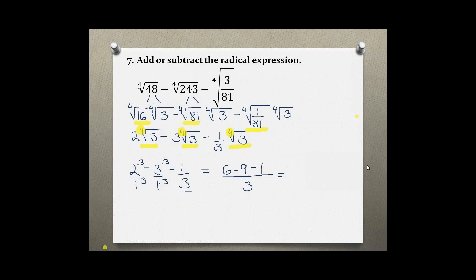I can subtract these fractions now, or the numerators. So 6 minus 9 minus 1 gives me negative 4 over 3. And then I have the same radicand for all of them, which just comes down. So negative 4 over 3 with a fourth root of 3.